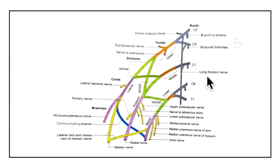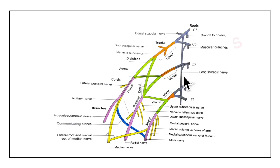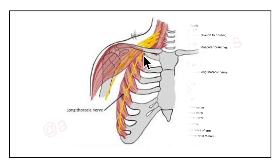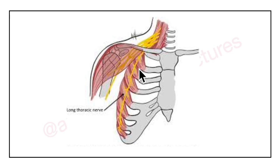The nerve to serratus anterior, also called the long thoracic nerve, arises by three roots. The roots from C5 and C6 pierce the scalenus medius muscle and join the root from C7 over the first digitation of the serratus anterior muscle. This nerve passes behind the brachial plexus, descends, and gives branches to the digitations of the serratus anterior muscle.